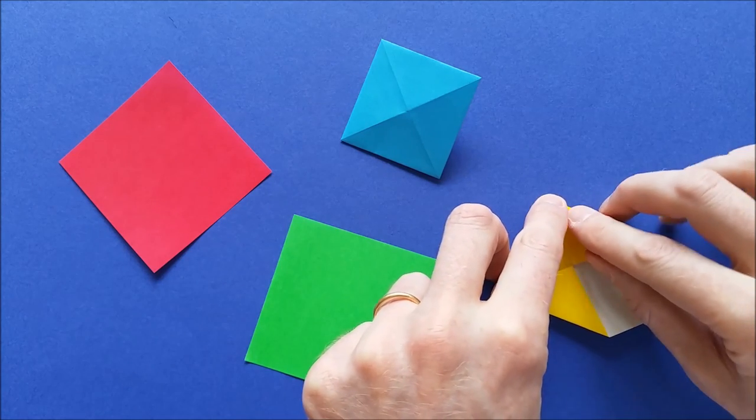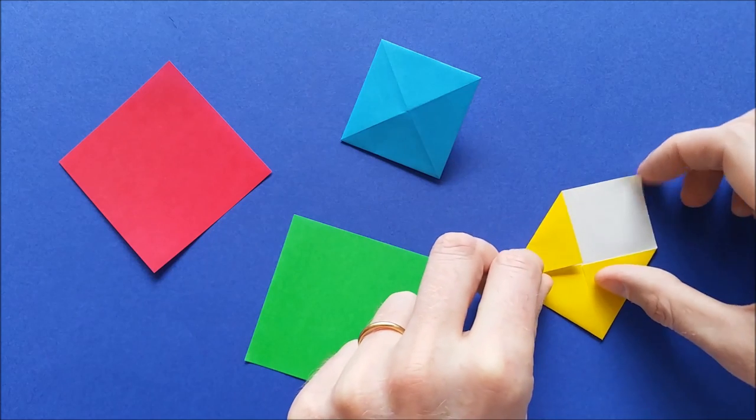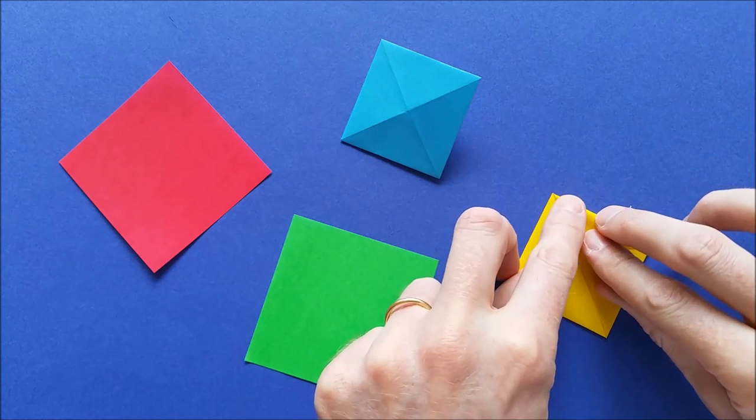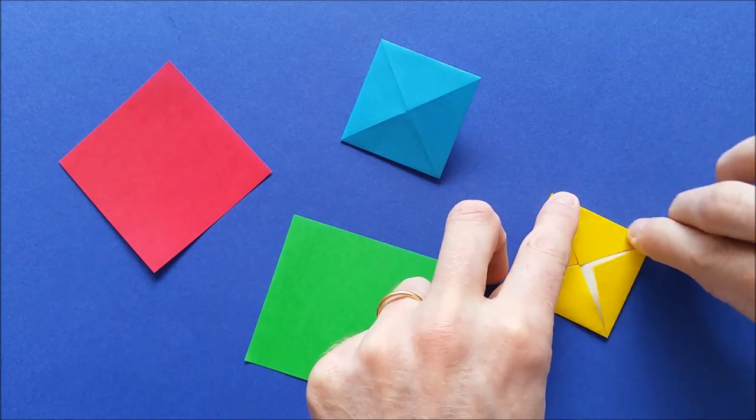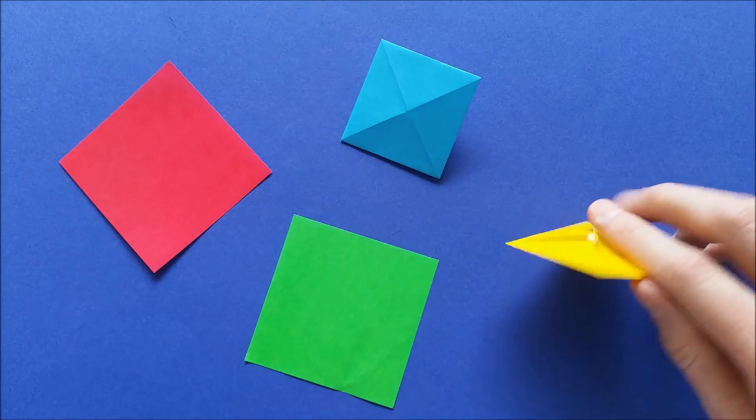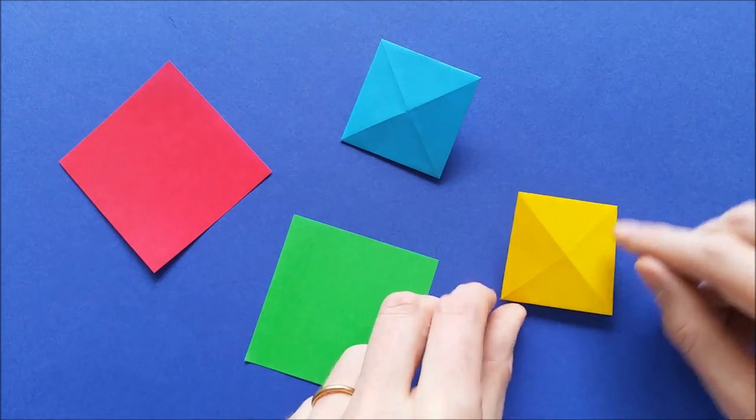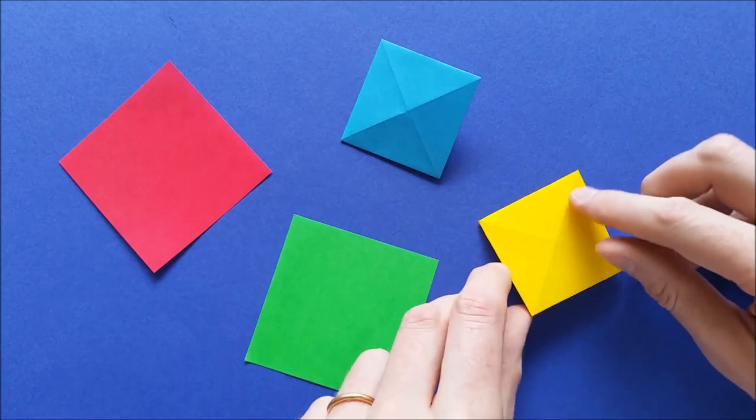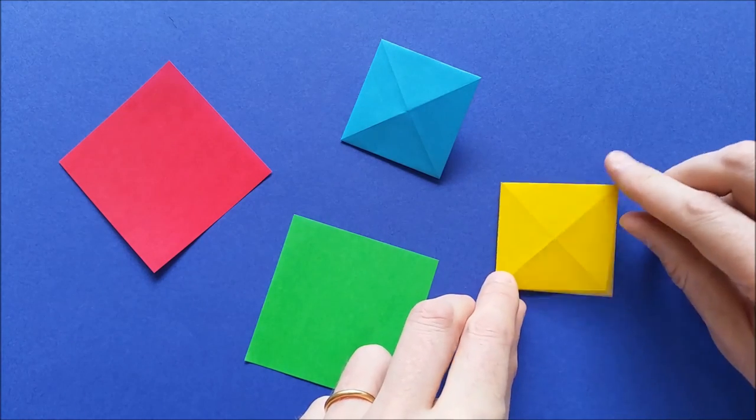So it's a very easy origami pixel. And your pixel is done. On the front side it has a nice diamond shape, especially if you use a shiny origami paper.